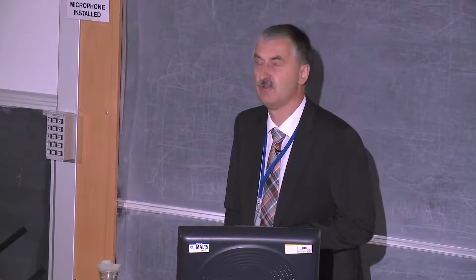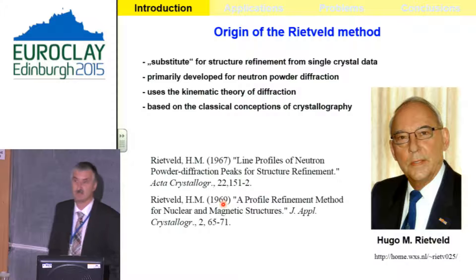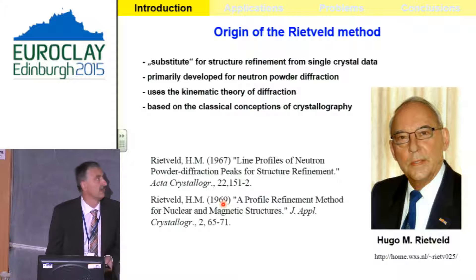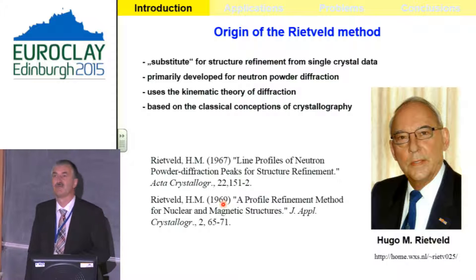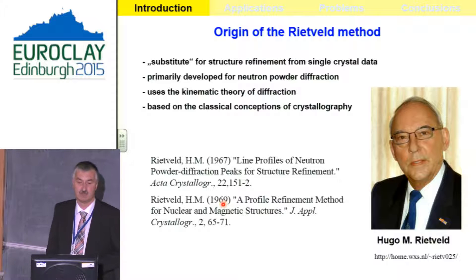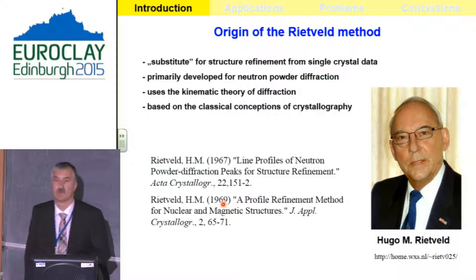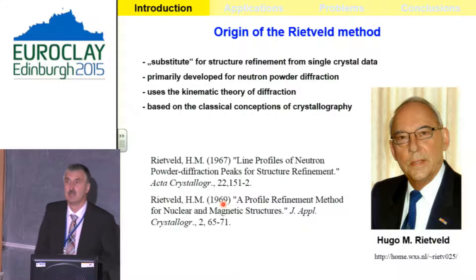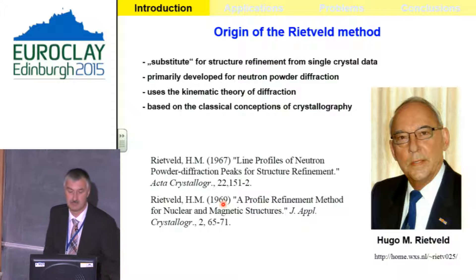The history of the Rietveld method started in 1967, with a seminal paper in 1969. It was developed as a substitute — because Hugo Rietveld had the problem of having only powders where the structure has to be refined. It was primarily developed for neutron powder diffraction, and the mathematical apparatus stems from the classical conceptions of crystallography and the kinematical theory of diffraction.